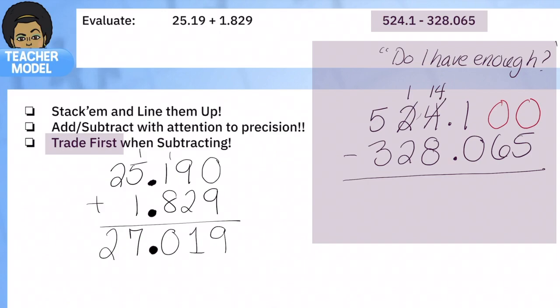Now 14, and notice because I had to regroup with the one, I don't have enough anymore, so I'm going to regroup again. Now I have enough: 11 minus 2, 14 minus 8, 1 minus 0. Yes, I have enough. 0 minus 6? No, I do not have enough, so let's regroup here.